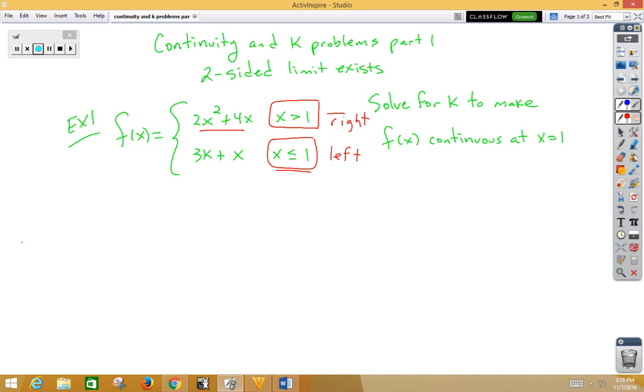The first rule for continuity is the two-sided limit has to exist. For the two-sided limit to exist, we need the limit as x approaches from the right to be the same as the limit as we approach from the left.